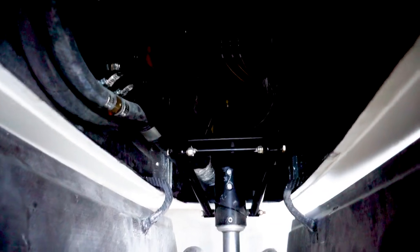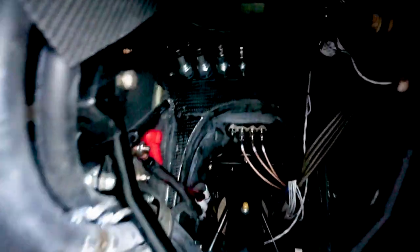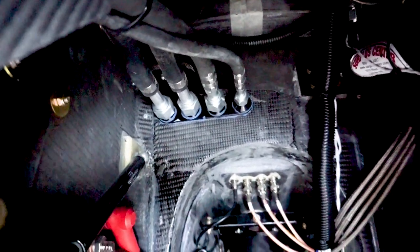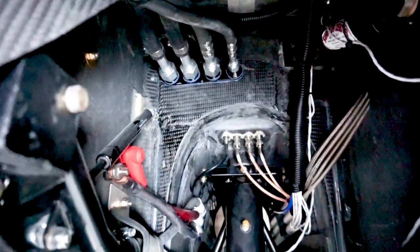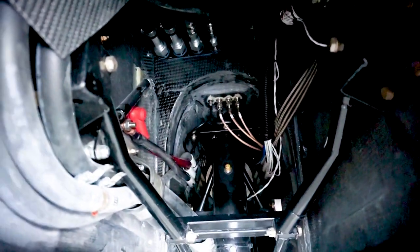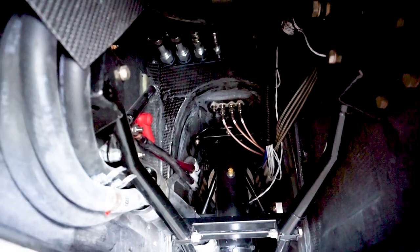Those are all the air conditioning and heater lines running through there into the cabin. Everything has to go through the pressure bulkhead, so you have to make sure everything is airtight. That's why I have all the bulkhead pass-throughs.